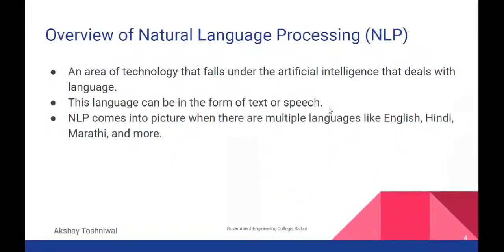NLP is one area that falls under artificial intelligence. AI is the bigger umbrella, and inside that you have machine learning, computer vision, natural language processing, robotics, brain-computer interface, and deep learning. NLP is an area that deals with text and speech — what you say, what you listen to, what you type. It comes into play when you are trying to deal with multiple languages or process the language you're dealing with.